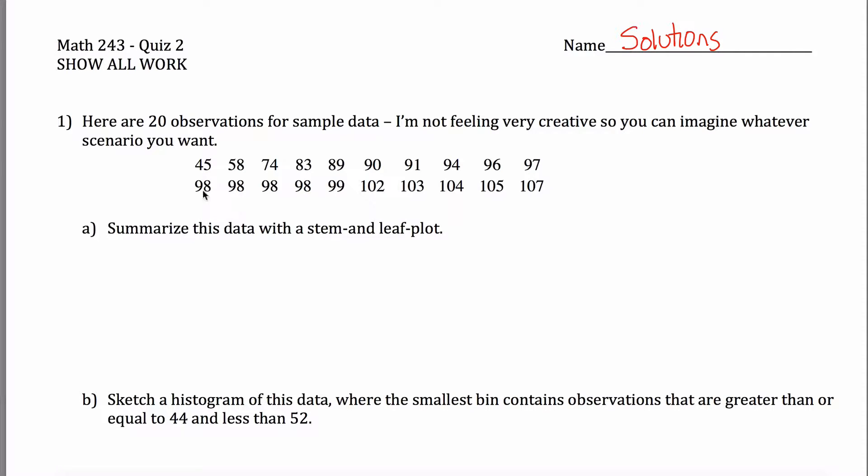Alright, here are Solutions Quiz 2 from Math 243. I gave you some data, I gave you 20 observations. Didn't tell you a story this time because I wasn't feeling like it. And the first thing I ask you to do is summarize this data with a stem and leaf plot.